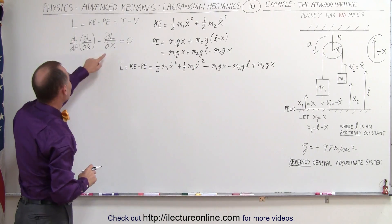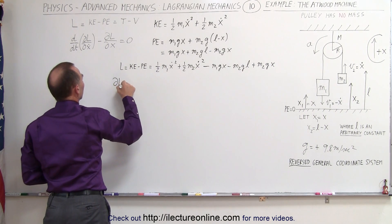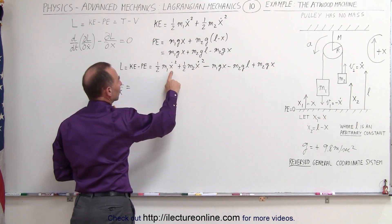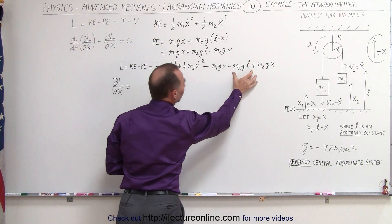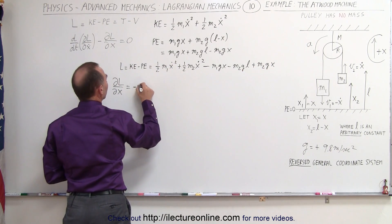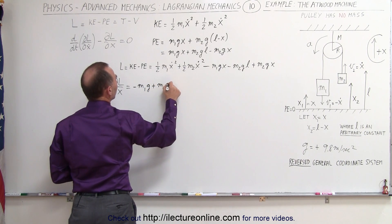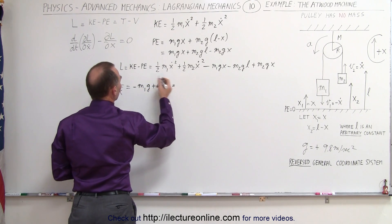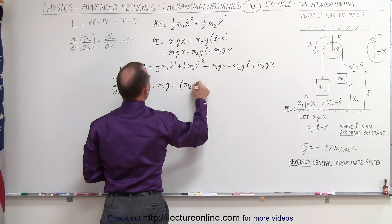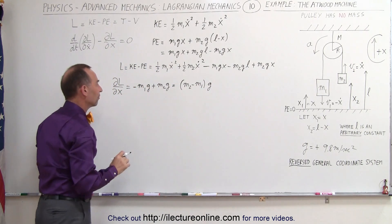Now we're ready to find the partial of the Lagrangian with respect to x. The partial of L with respect to x — notice there's no x in several terms, so only two components survive. That gives us negative m1g plus m2g. We can factor out g, so this becomes (m2 minus m1) times g.